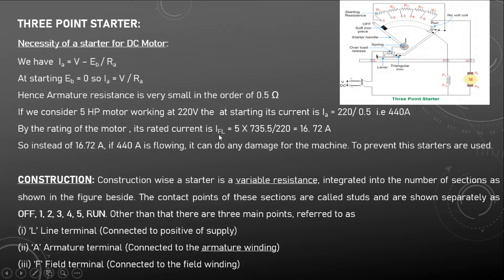By the rating of the motor, the rated current equals 5 HP converted: 5 × 735.5 divided by 220, giving a rated current of 16.72 amps. Just imagine — the motor is designed for 16.72 amps, but when you switch it on, starting current may reach 440 amps, which can cause serious damage. To prevent this, we use starters.